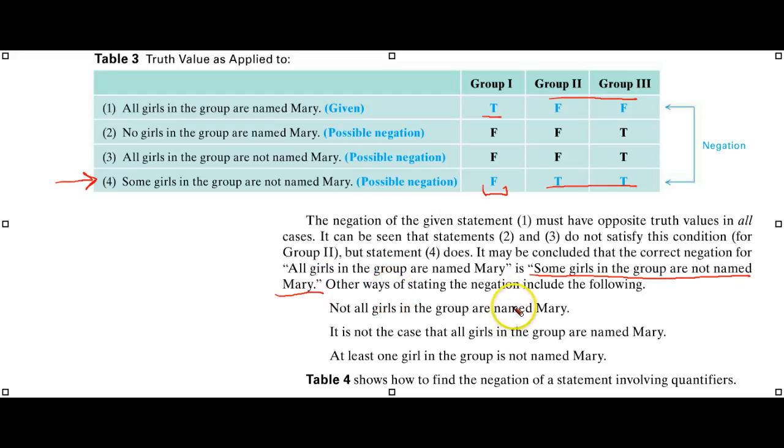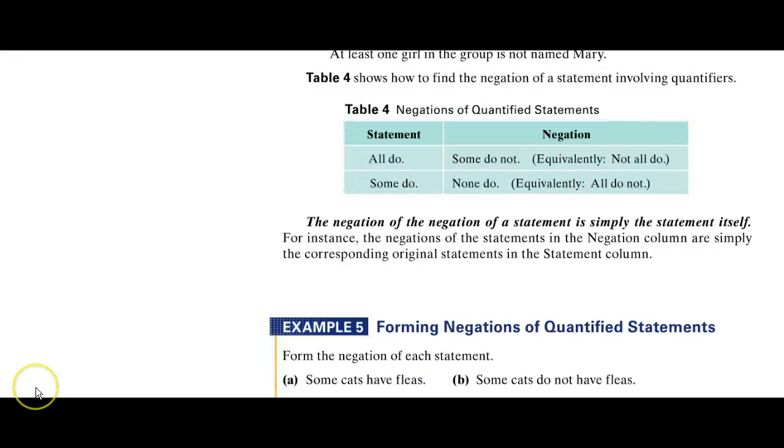Other ways of saying it that would be acceptable - any of these, and we'll let you read that from your text. These are some others here. The negation of quantified statements: 'All do' - negation: 'some do not.' 'Some do' - negation: 'none do.' Careful study and take notes. This is an excellent example here. The negation of the negation of a statement is simply the statement itself. Let's look at some more examples.